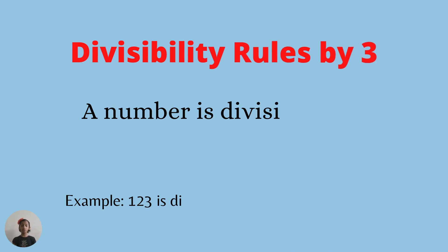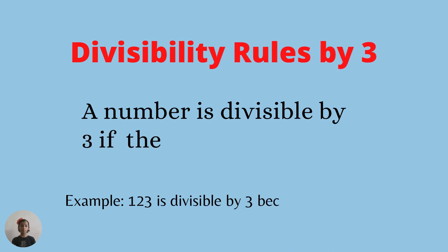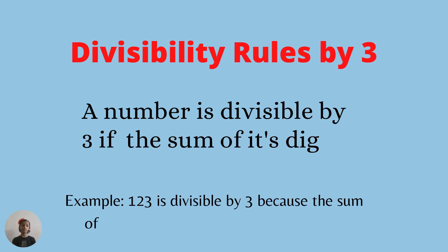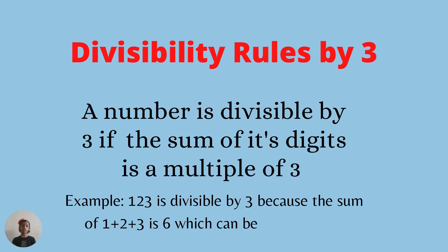Divisibility rule of three: a number is divisible by three if the sum of its digits is a multiple of three. Example: one hundred and twenty-three is divisible by three because the sum of one plus two plus three is six, which can be divided by three.